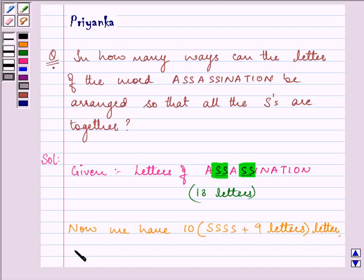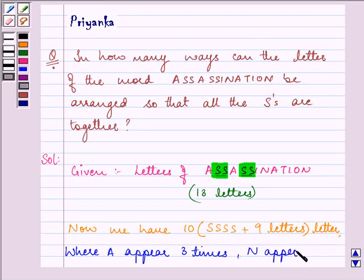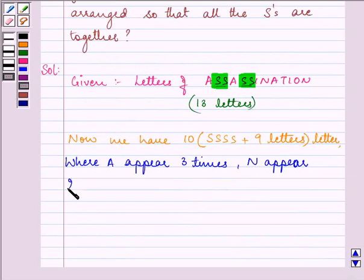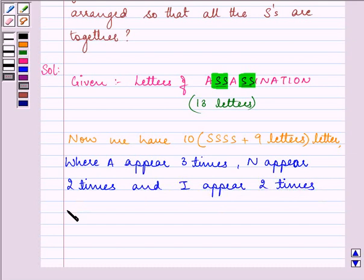Where A appears three times, N appears two times, and I appears two times. And the rest are all different.